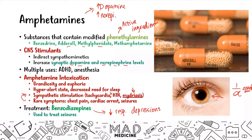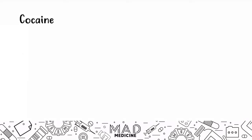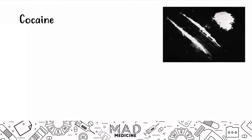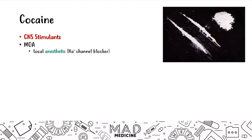The next topic is cocaine — a CNS stimulant. It has two main mechanisms of action. First, cocaine acts as a local anesthetic by blocking sodium channels on our nerves, functioning very similarly to lidocaine — you can tell because they share the suffix '-caine.' This blocks sodium channels in nerves, causing nerve firing to become delayed and slower.